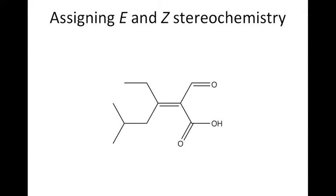This video will help you assign the correct stereochemistry to alkenes by using the Cahn-Ingold-Prelog system. The first step in assigning the correct stereochemistry for this compound is to draw an imaginary line that will split the double bond in half and then assign priorities to the atoms directly attached to each of the sp2 hybrid carbons.